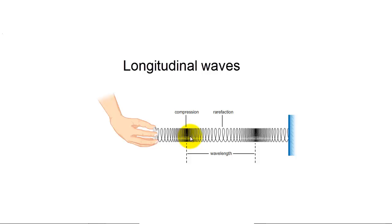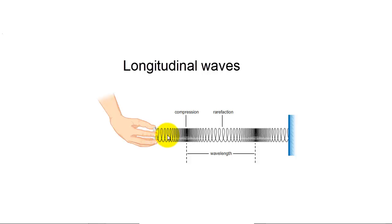The sections of the slinky spring where the turns are very close to each other is referred to as a compression, while the section where the turns are far away from each other is referred to as a rarefaction. A compression could represent a wave crest, so the distance between adjacent crests represents the wavelength. A slinky spring can be used to demonstrate longitudinal waves by moving one end to and fro, while the other end is fixed.